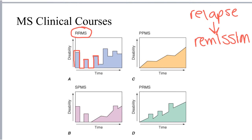The second most common clinical course at diagnosis is primary progressive MS, or PPMS. This course is characterized by steady worsening of the MS condition from the onset of disease, with no remission between exacerbations, worsening of the disease state over time, and lasting disability.